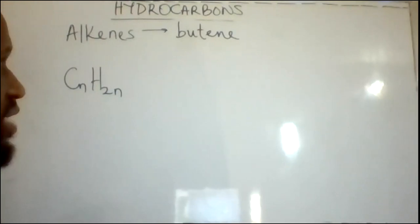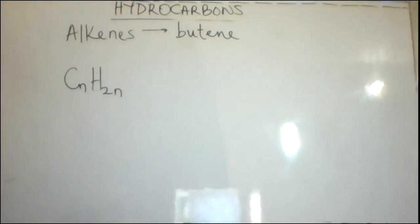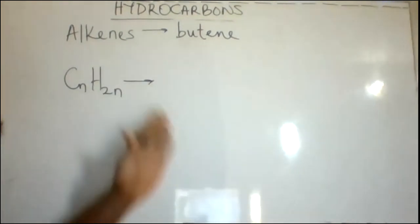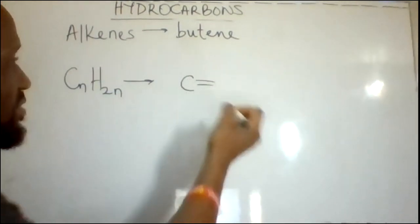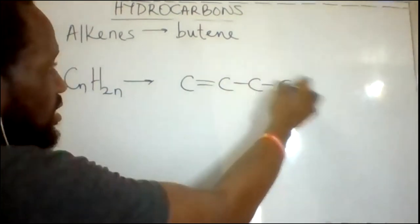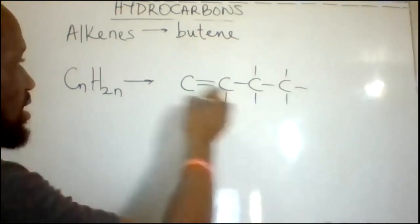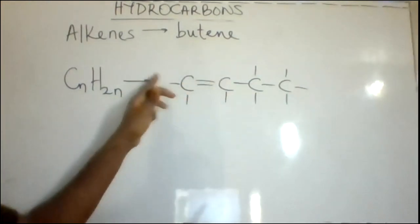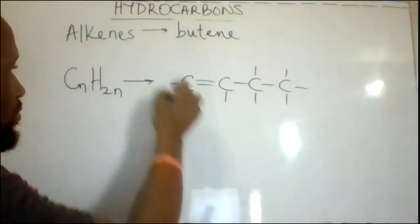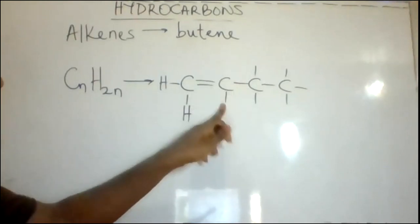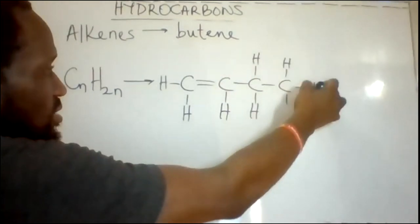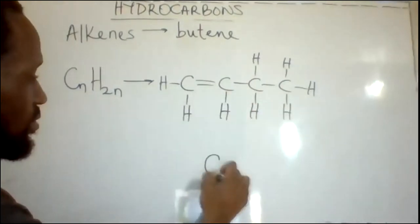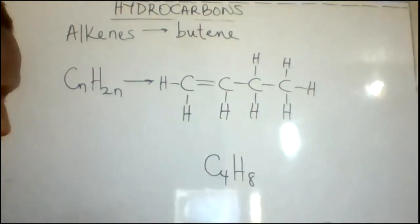The final alkene example is butene. Butene should have a single double bond because it is a simple alkene. It has four carbon atoms with the double bond on the first carbon and hydrogen atoms across the carbon chain. The first carbon has two bonds already and takes two more to make four. The second carbon has three bonds and takes one more. Each carbon atom should have four bonds across it. This gives us C4H8, the third member of the alkene series, butene.